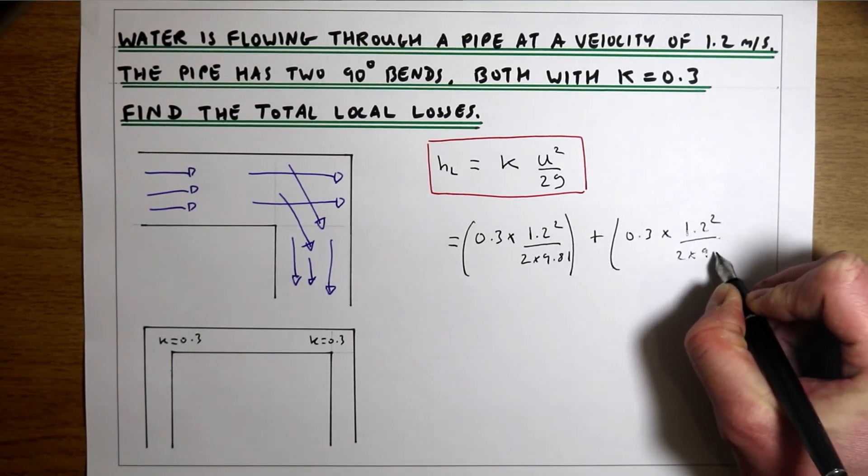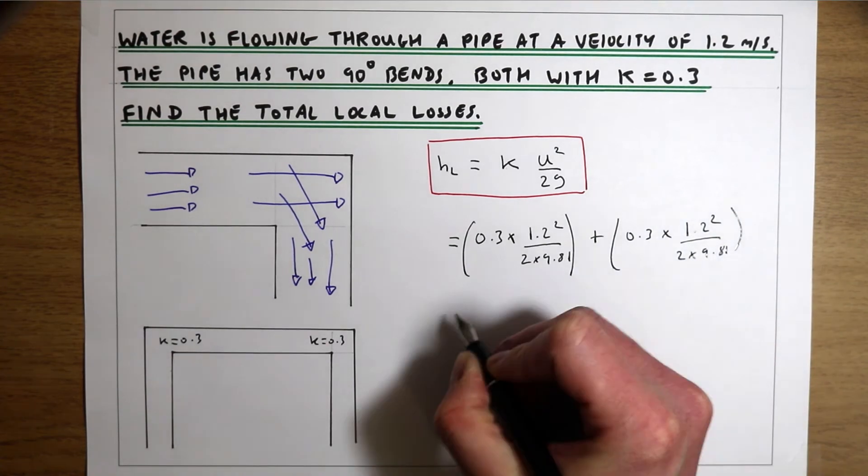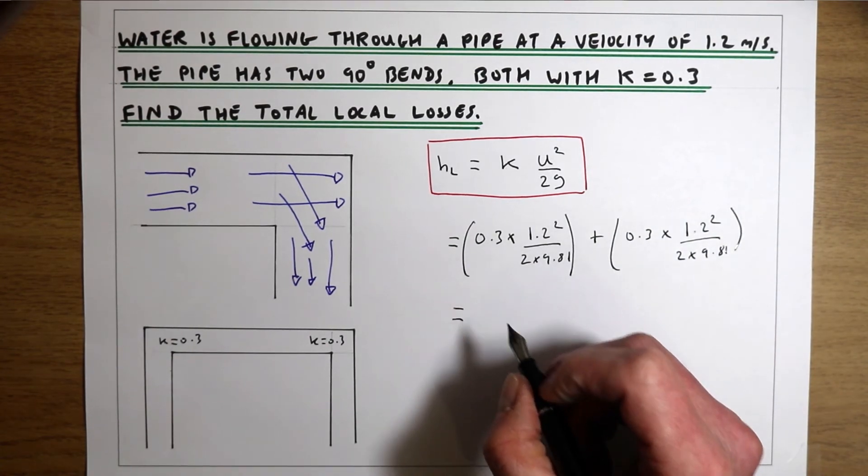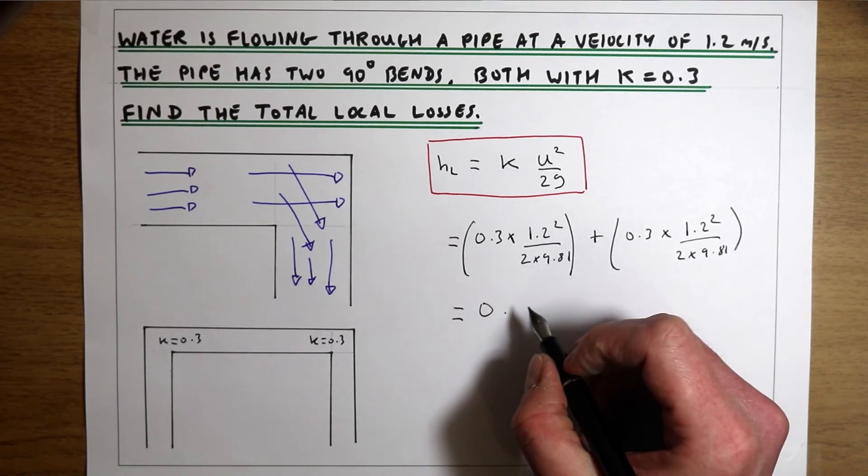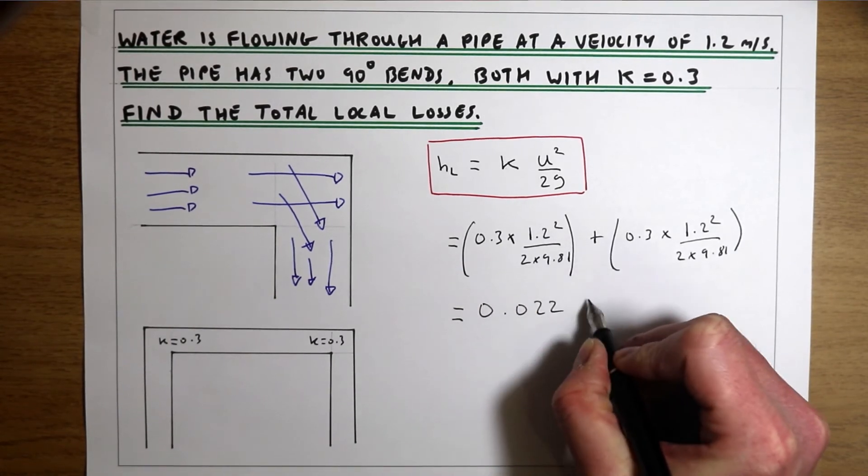And that tells us that we've had a total loss, well, a loss in each bend of 0.022 metres.